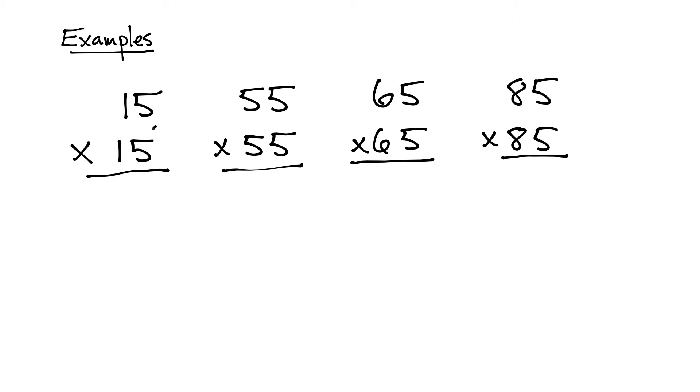Okay, here are a couple more examples. So we've got 15 times 15, 55 times 55, 65 times 65, 85 times 85. Again, we're squaring numbers that end with 5. The answer is always going to end with 25 for every single case you're going to look at.